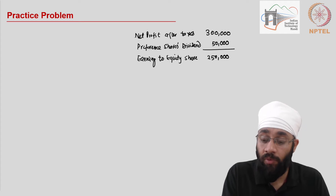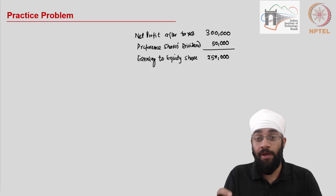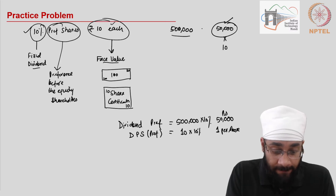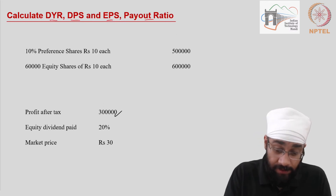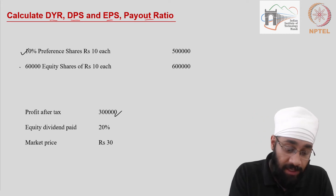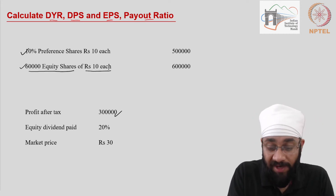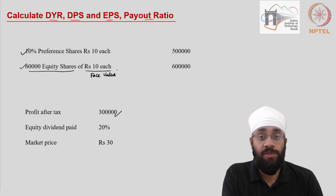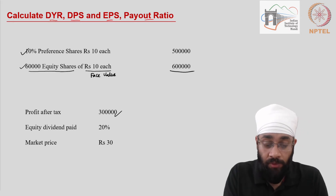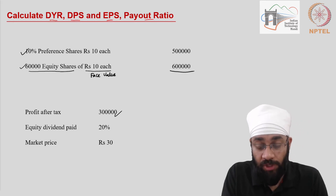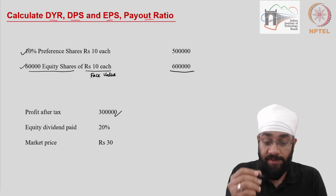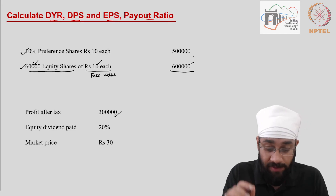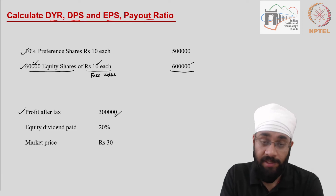The second line says 60,000 equity shares of rupees 10 each — again, this is the face value for equity shares. Both equity and preference shares have a face value. The total equity share capital is 6 lakhs, meaning 60,000 shares at rupees 10 each were invested in the business.